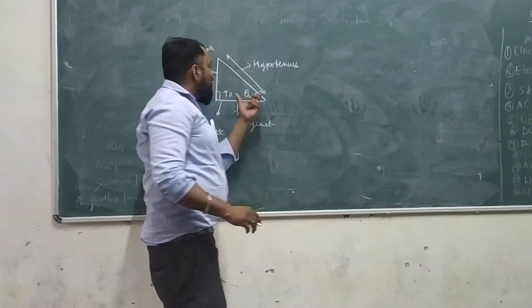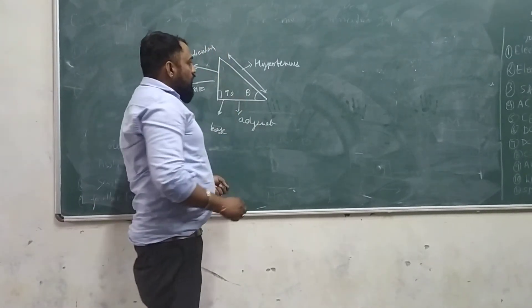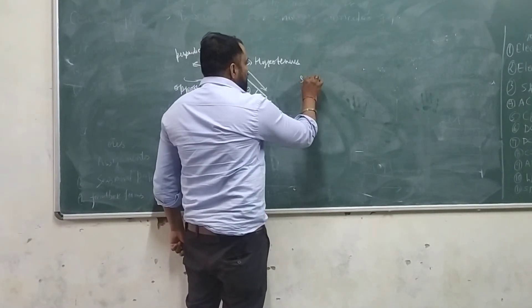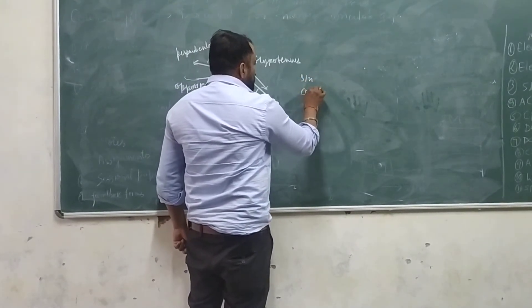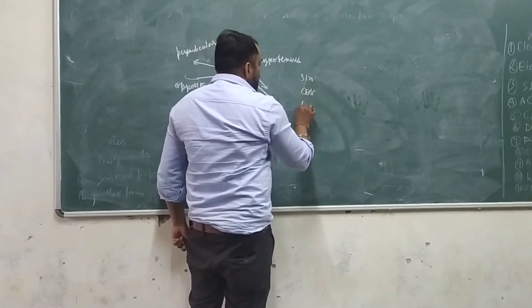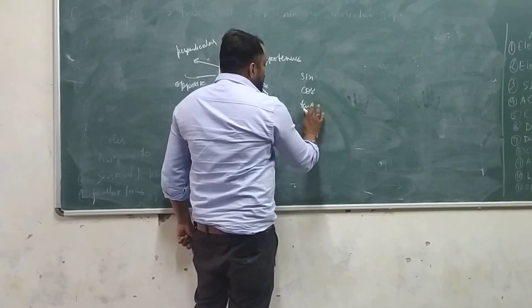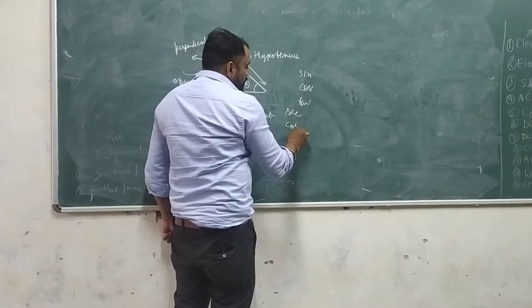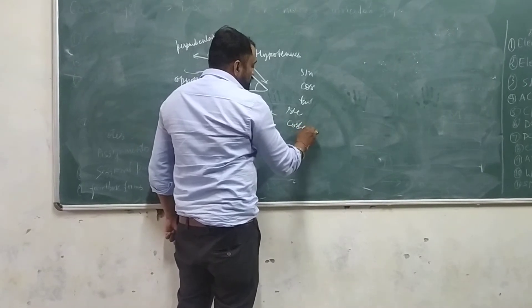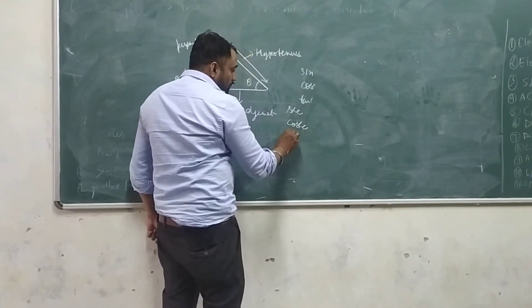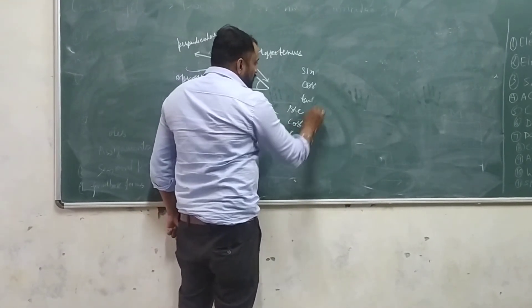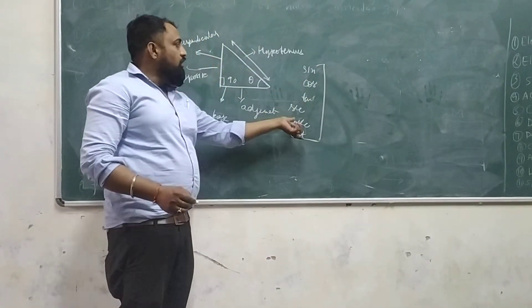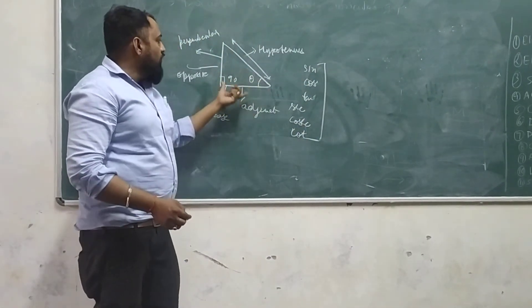Here, some trigonometric quantities are: sine, cosine, tangent, secant, cosecant, and cotangent. These are the six trigonometric identities.